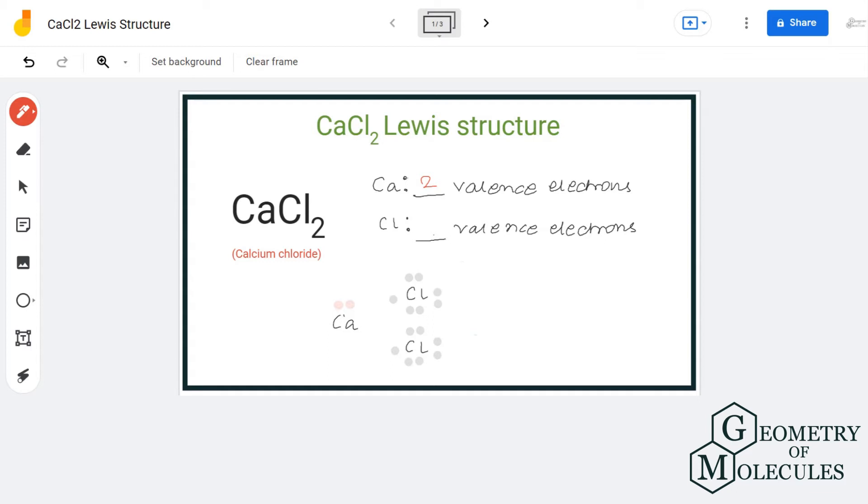Calcium donates one electron each to one chlorine atom. This way chlorine atoms will have complete octets, and this is the Lewis structure for CaCl2.